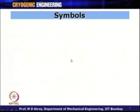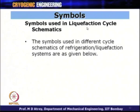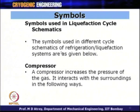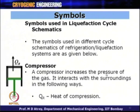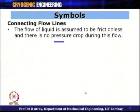In this topic, we will cover various cycles shown in schematics using standard symbols. The symbols used in liquefaction and refrigeration cycle schematics are as follows. A compressor increases the pressure of the gas; it gives heat of compression QR to the surroundings, and WC denotes the work required for compression. Connecting flow lines assume frictionless flow with no pressure drop, and the direction of arrows indicates gas flow direction.